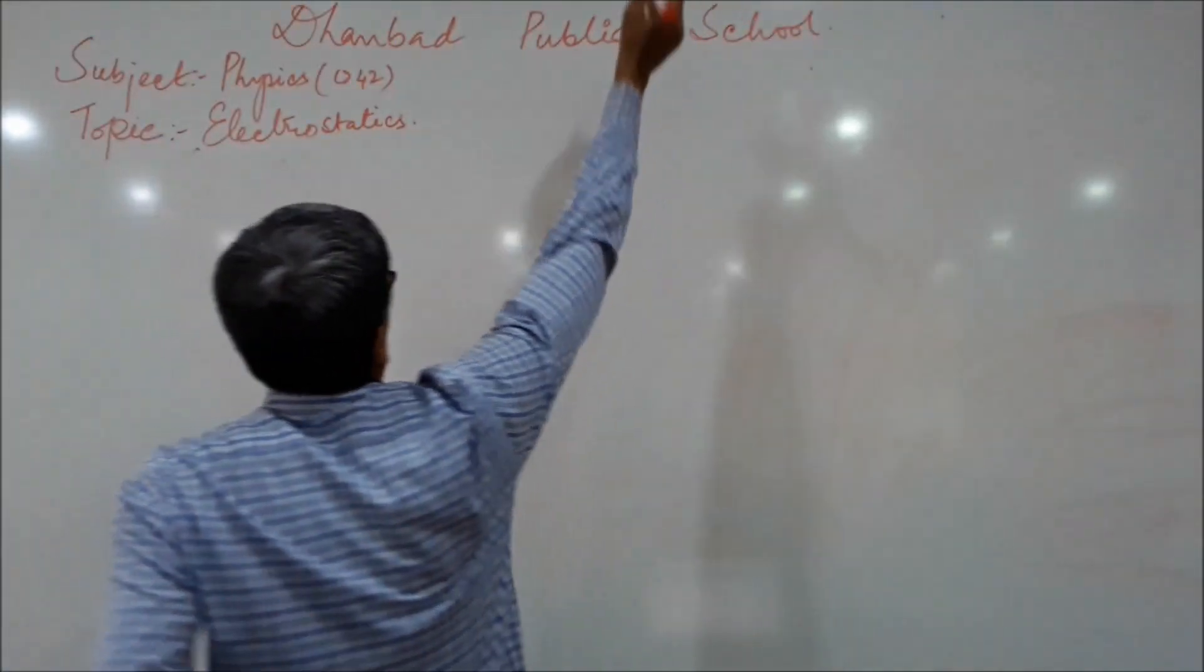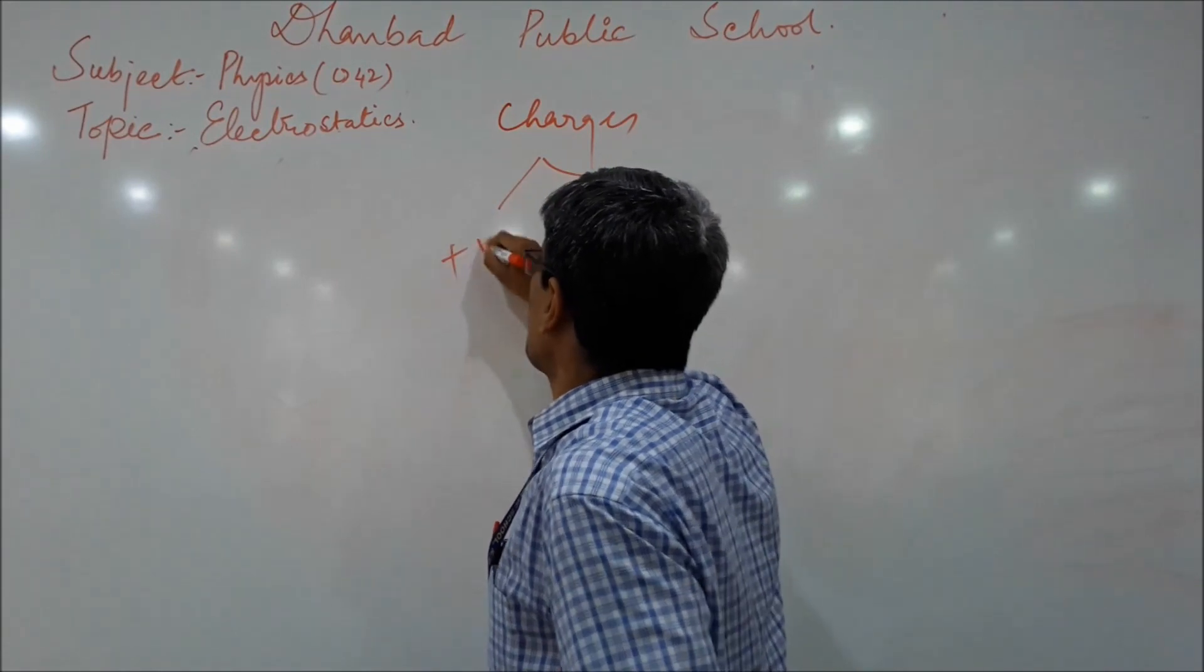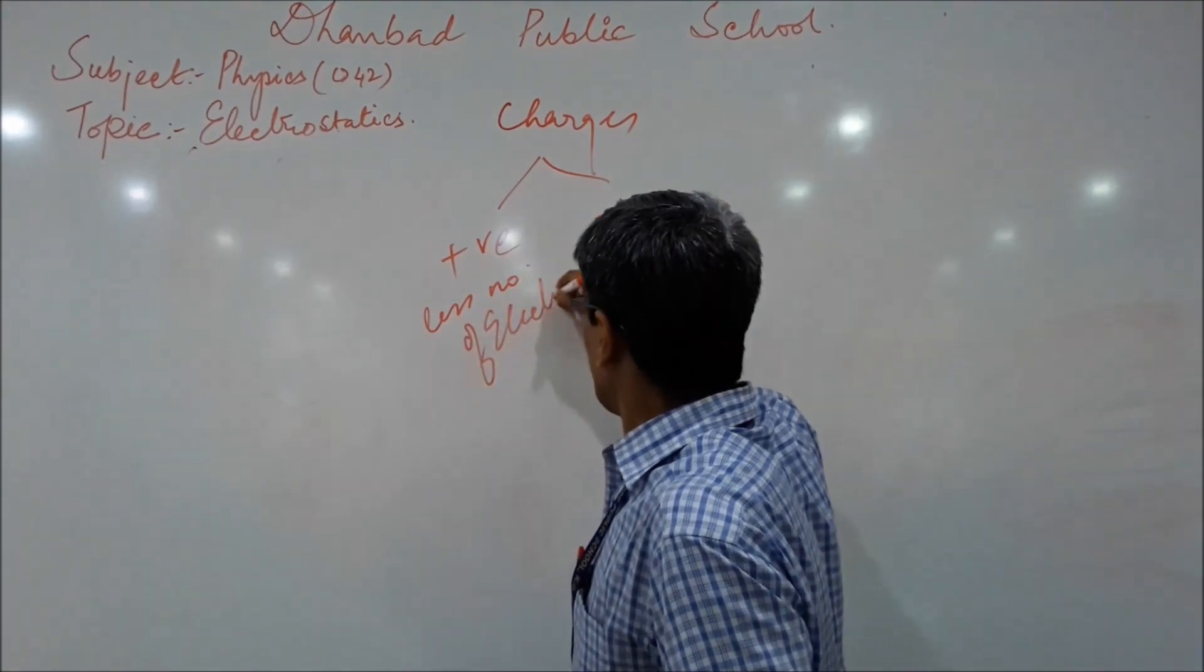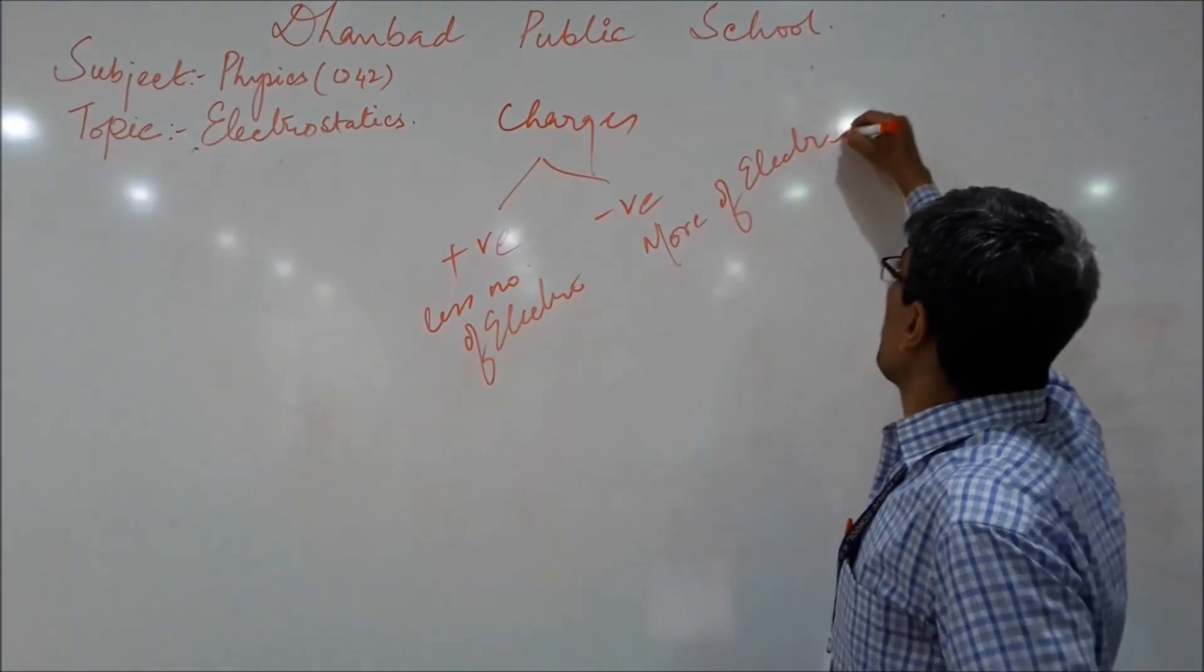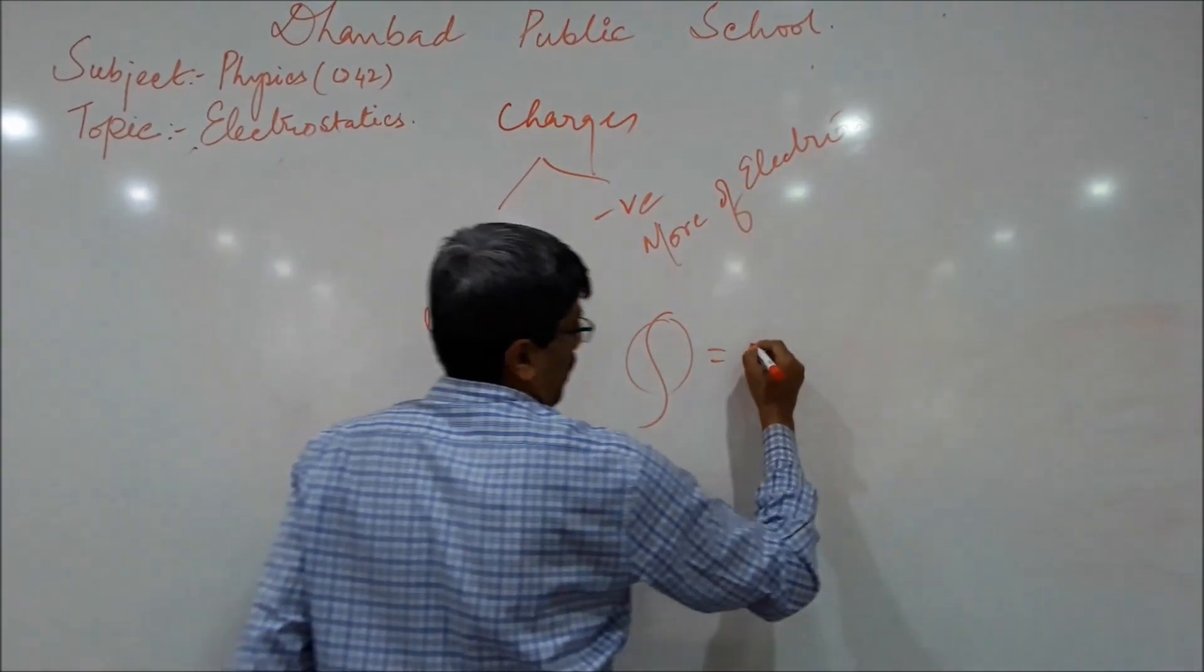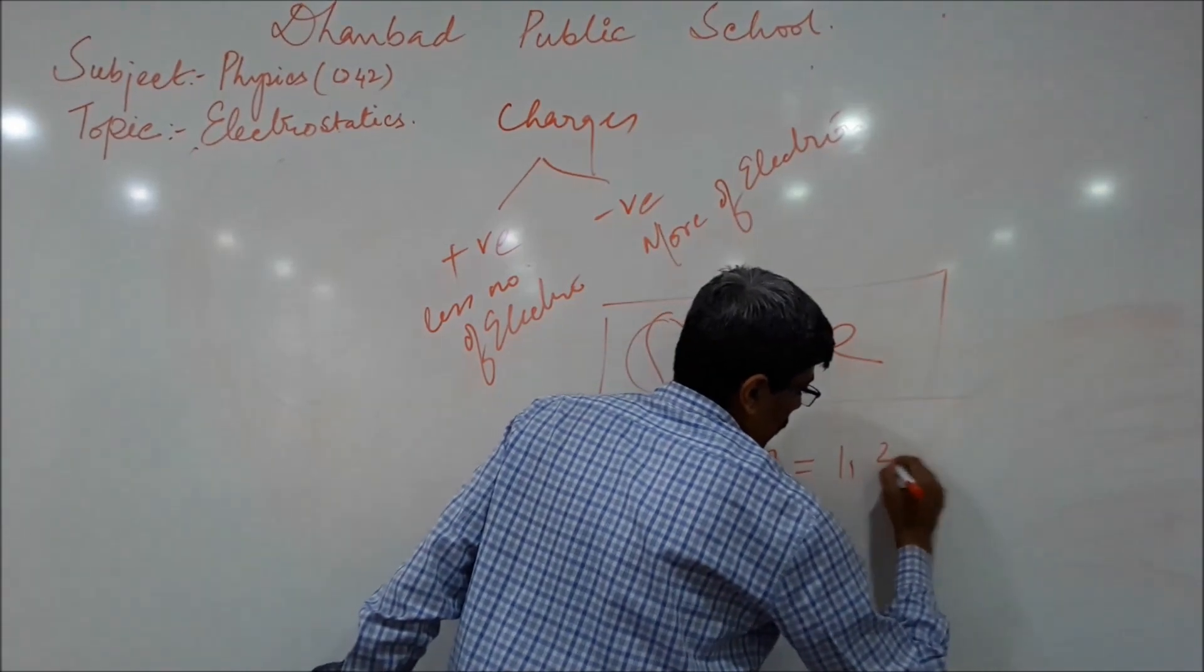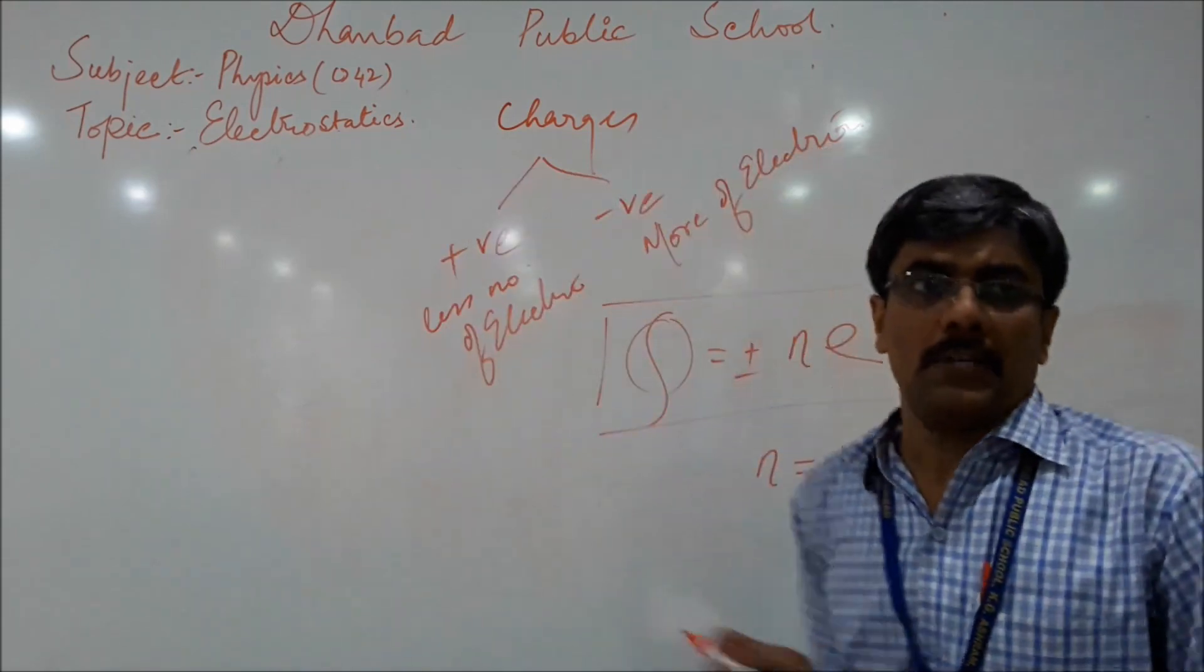Let us sum up. Charges are of two types. Positive, negative. Positive means less number of electrons, negative means more number of electrons, and amount of charge in a body can be written as n times e, e being the charge of a single electron, n being whole numbers, one, two, three, four. Remember, n can never be fraction.